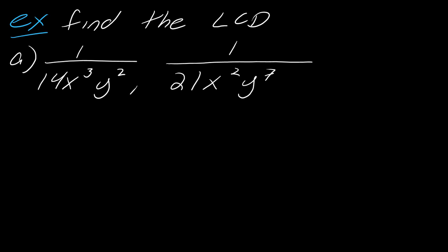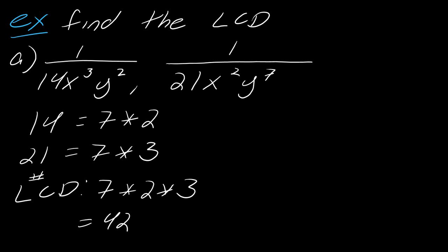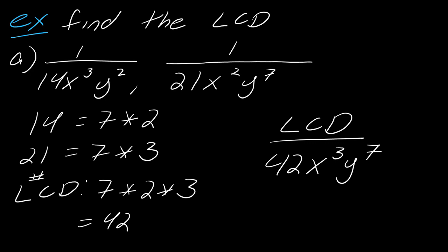Now let's look at the whole problem when you have to figure out both the number part and the variable part. I always like to do the number part separately from the variable part. With 14 and 21, seven divides both, so seven is what they have in common. The LCD is what they have in common times what they don't: 7 times 6 equals 42. So the total LCD is 42x³y⁷, picking the highest exponents.